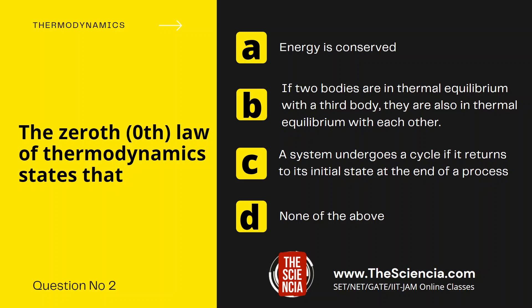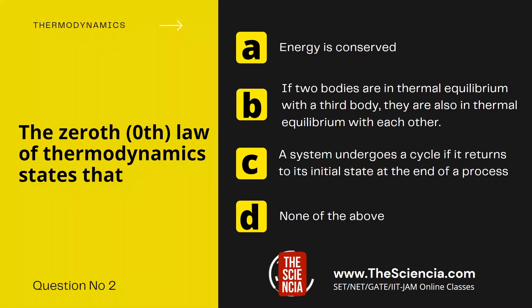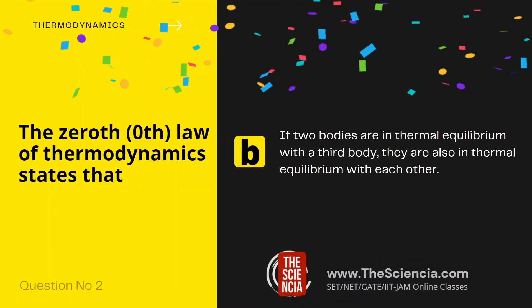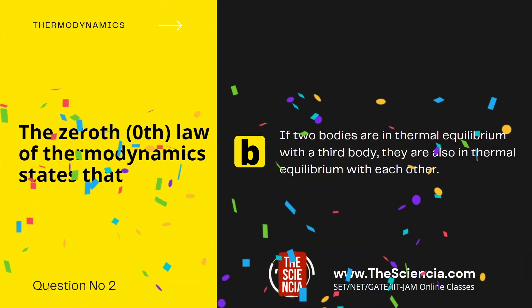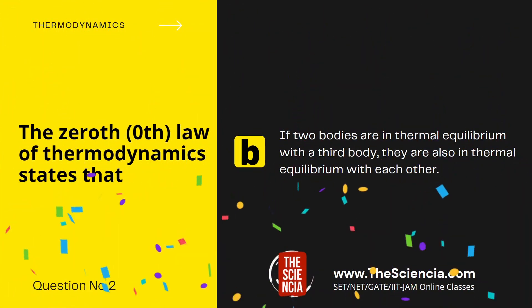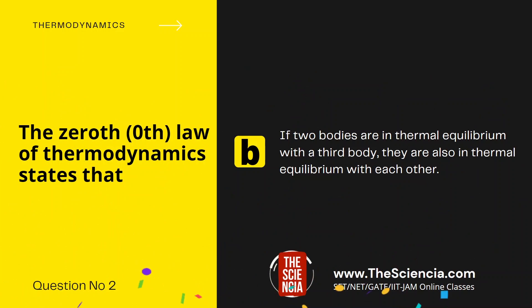And Option D, none of the above. The correct answer is Option B — if two bodies are in thermal equilibrium with a third body, then they are also in thermal equilibrium with each other. This is what the Zeroth Law of Thermodynamics states.